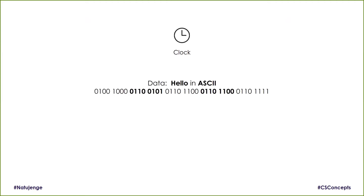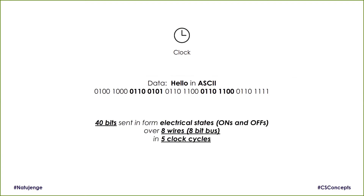Now, in the data we looked at, we have 40 bits. If you're using an eight-bit bus, you'll have to send the data in five clock cycles — because in the first cycle we send eight bits, in the second cycle we send the next eight bits, and so on.